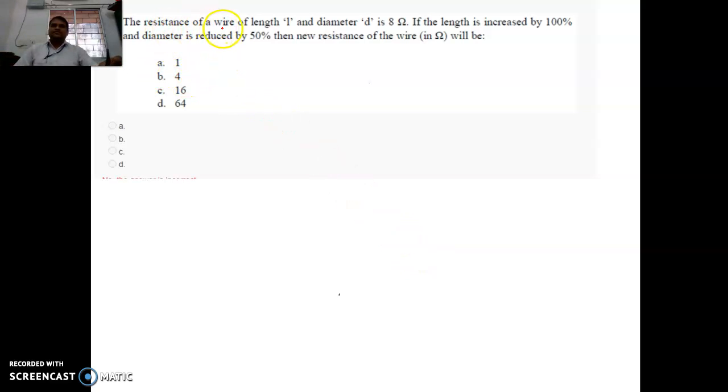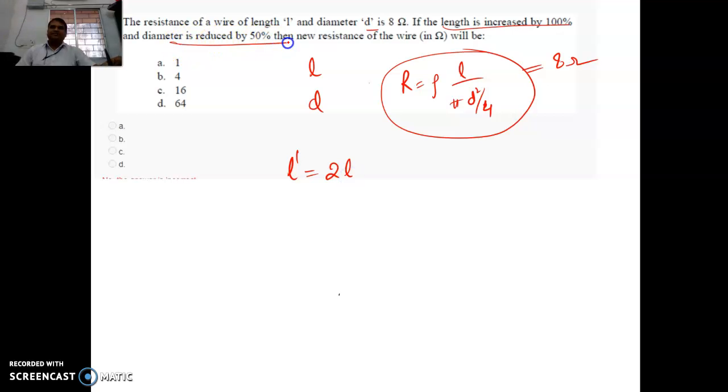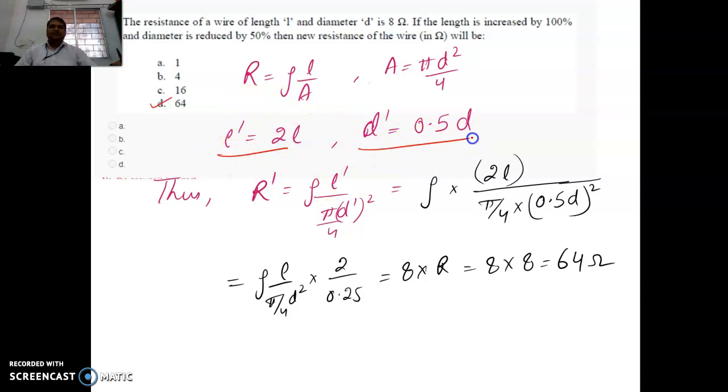Sixth question. The resistance of a wire of length L is given, diameter is D. We know that R equals rho L by pi D squared by 4, that is L by A. Area is pi D squared by 4. We can substitute the value of L and D here and get the resistance which equals 8 ohm given. So he says L increases by 100%, so new L dash is 2 times L and diameter reduces by 50%, so new D dash equals 0.5 D. By putting these two values, we can get the value of R dash which is 8 times the resistance value. The resistance is 8, so 8 into 8 is 64 ohms. The answer is D.